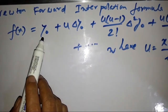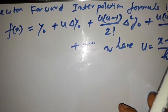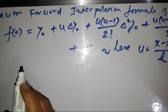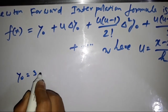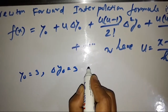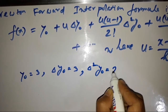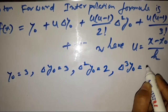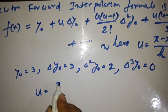From the table we know: y₀ = 3, Δy₀ = 3, Δ²y₀ = 2, and Δ³y₀ = 0.